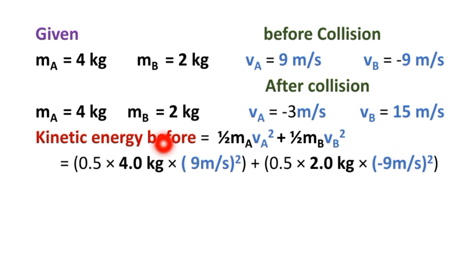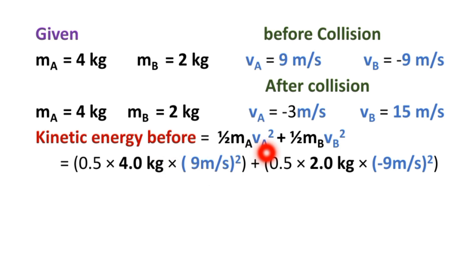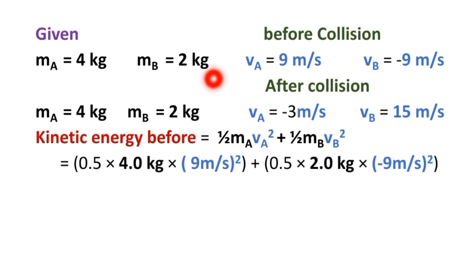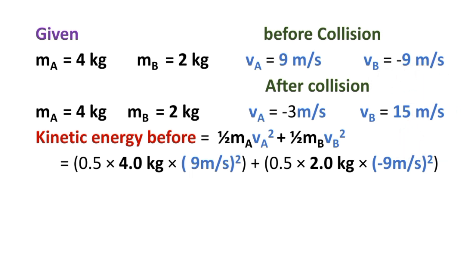So: KE before = 0.5 × 4 kilogram × (9 meter per second)² plus 0.5 × 2 kilogram × (minus 9 meter per second)². Kinetic energy of ball A = 0.5 × 4 × 81 = 162 kilogram meter squared per second squared.